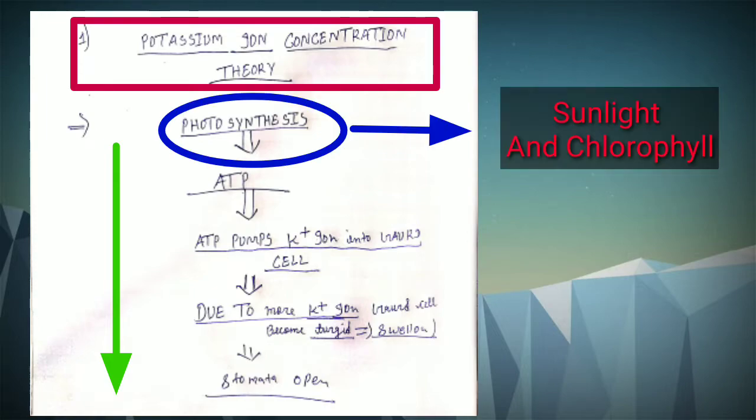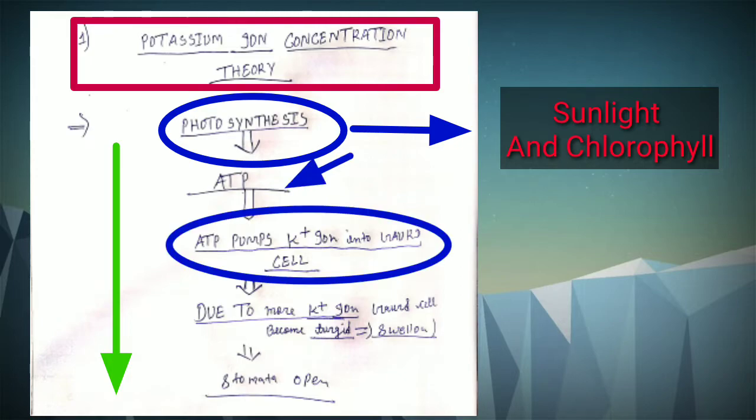This ATP actively pumps potassium ions into the guard cells. Due to more potassium ions, these guard cells become turgid, and due to swelling of the guard cells, the stomata opens.